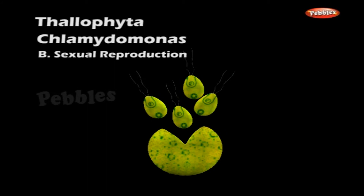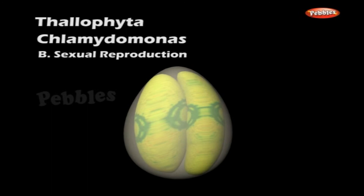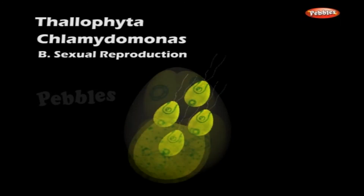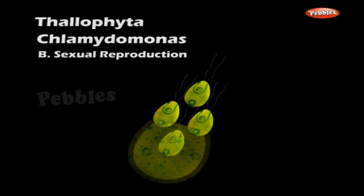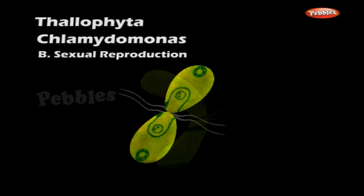Sexual reproduction takes place by the fusion of haploid gametes. The method of formation of gametes is similar to the formation of zoospores from a vegetative protoplast, but in this case the number of daughter cells produced is more, namely sixteen or thirty-two. The gametes are similar to zoospores in structure but smaller in size.